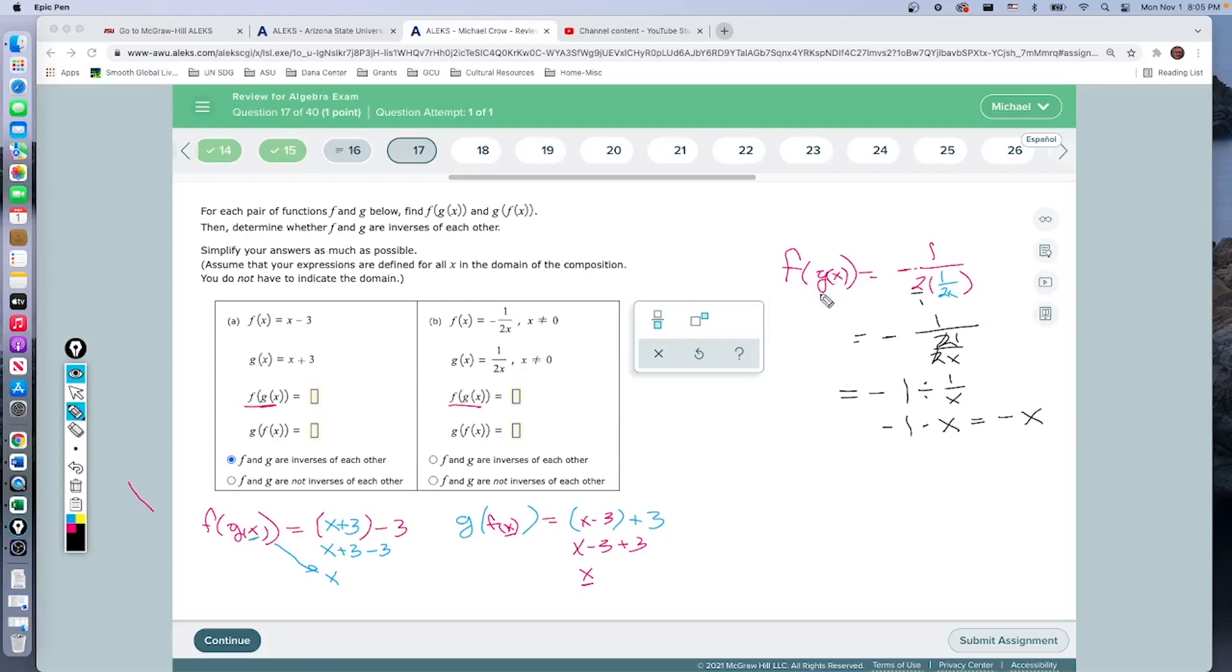But we didn't start with negative x—we started with positive x. So this is not an inverse. We ended up at negative x; that's not right. This probably would have worked if this wasn't negative, but it is negative. For this one, we don't even have to check the second one. We just say that f and g are not inverses of each other, because negative x is not x.